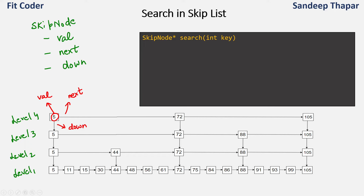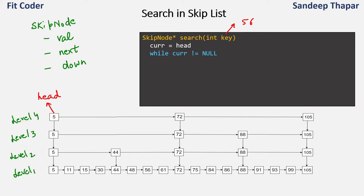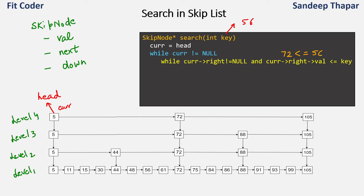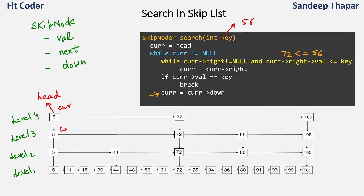Let's say we have to search for value 56. The topmost left node is considered the head. So current is pointing to head. We traverse while current is not null. Inside, we check while current right is not null and current right's value is less than or equal to the key. Current right is 72, and 72 is not less than or equal to 56, so this is false — we go down. We set current equal to current down, coming to the level below. Now current right is 44, and 44 is less than or equal to 56, so this is true and we enter the inner loop.